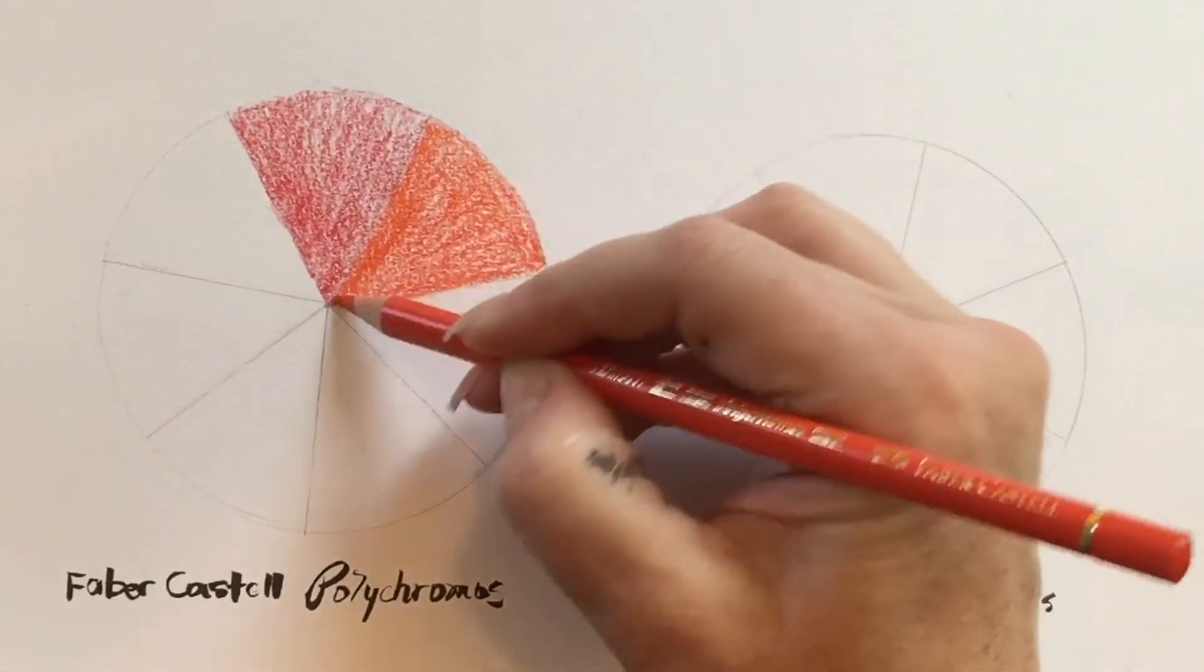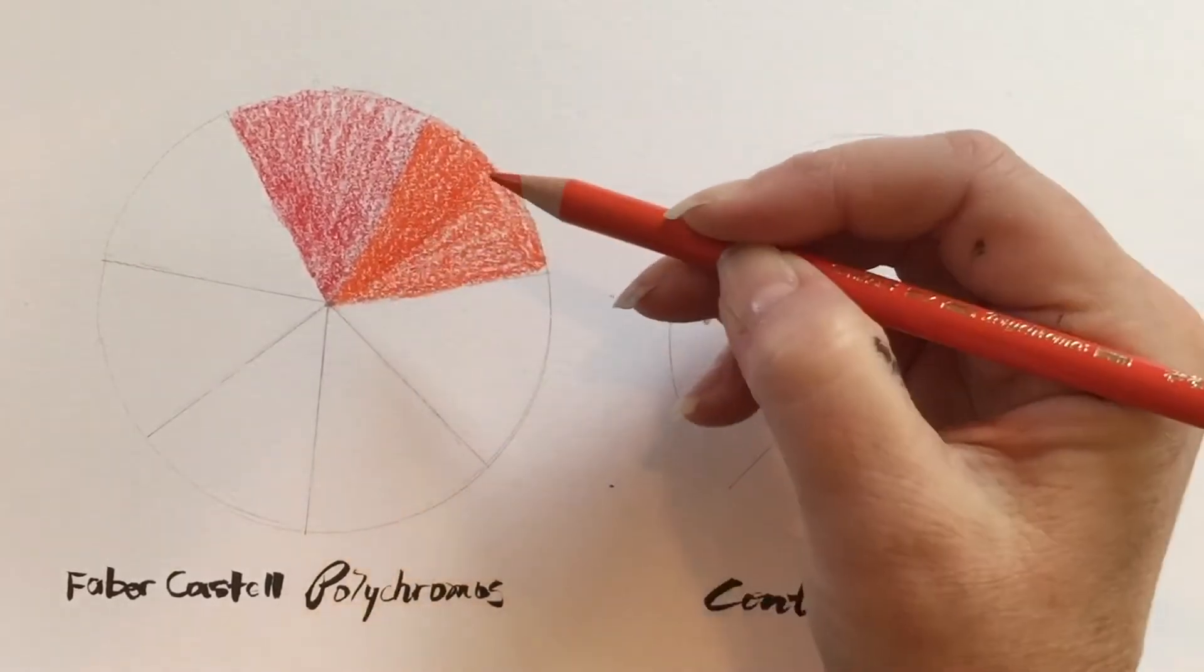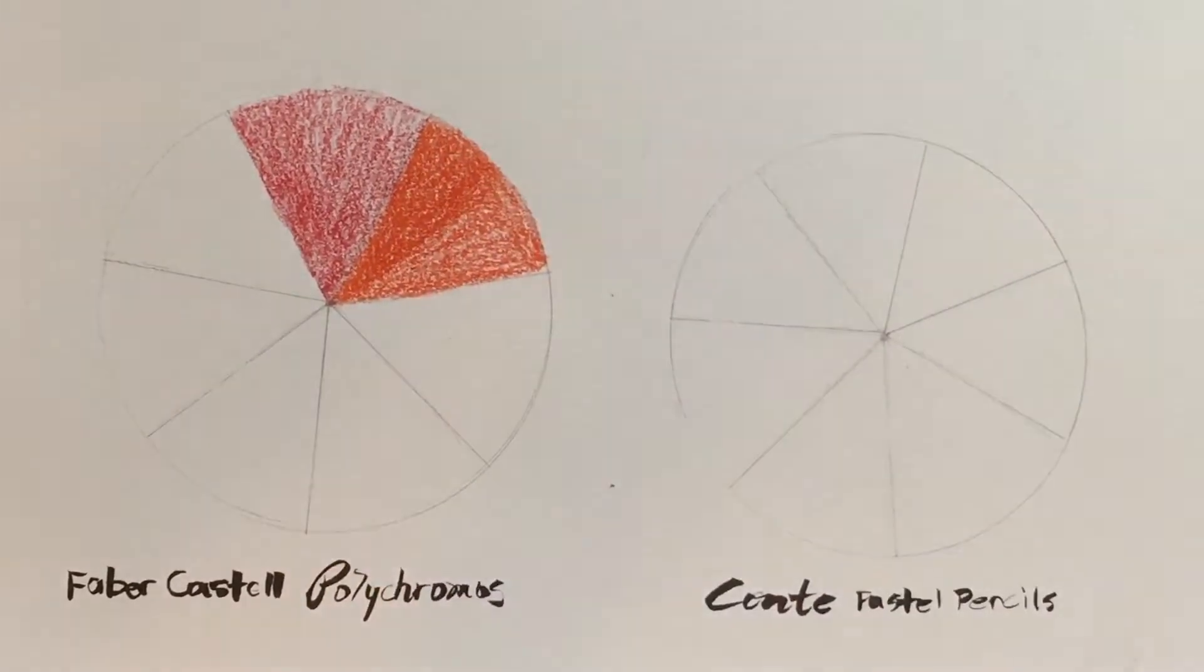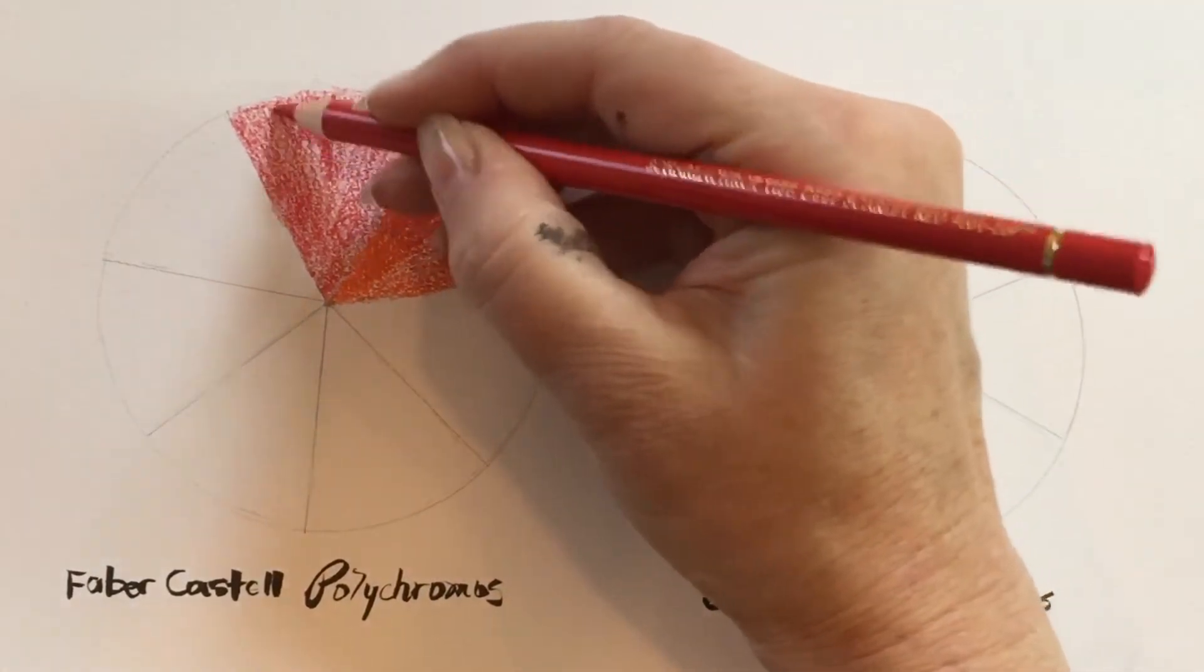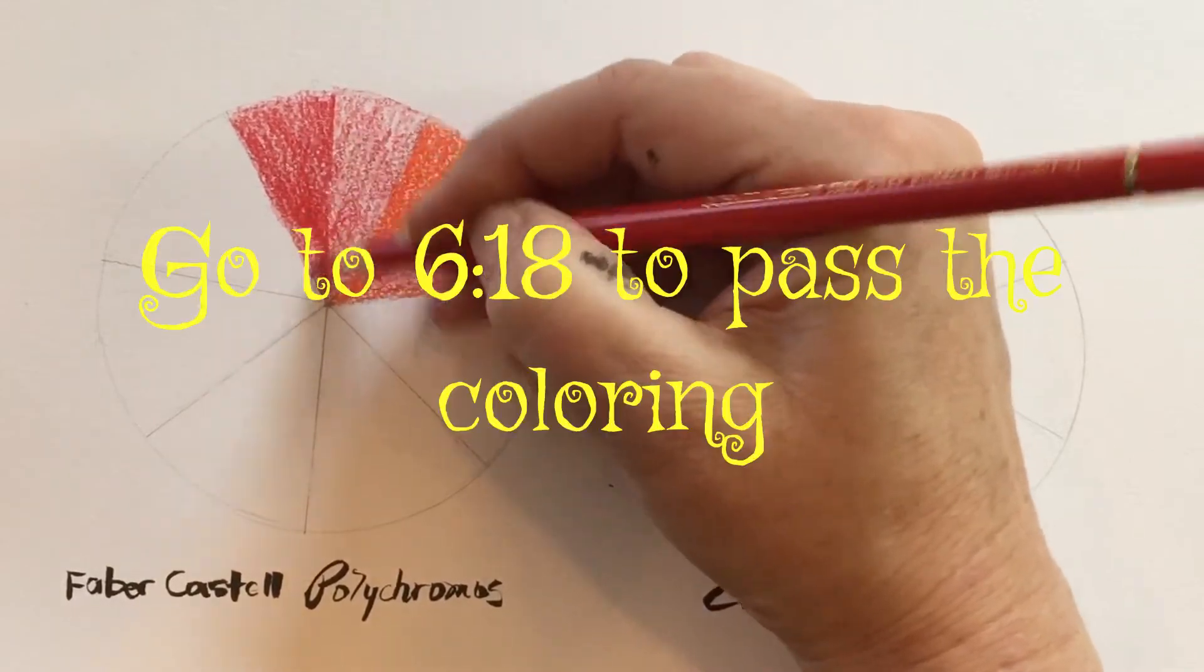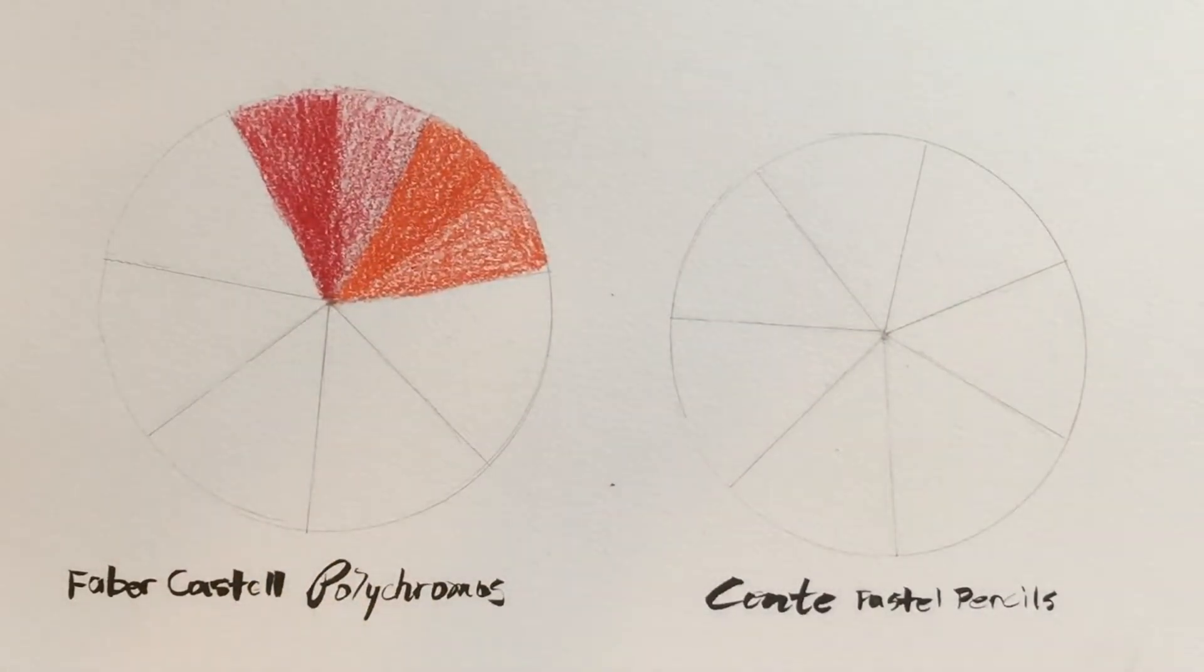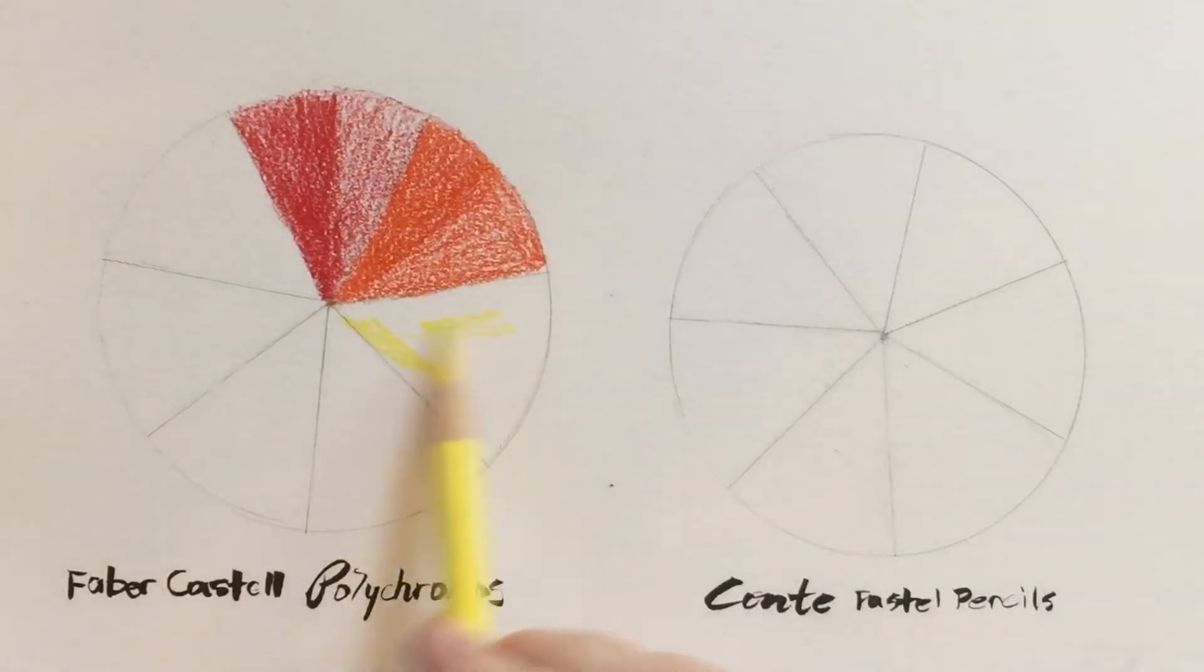You know what, I think what I'm going to do is make half of this very intense. I'm going to push a little bit harder on the one side, and I'm also going to see how long it takes me to do this side, meaning the Faber-Castell side versus the Conti side. Once again, I'm not being very neat, but I want you to see the difference.